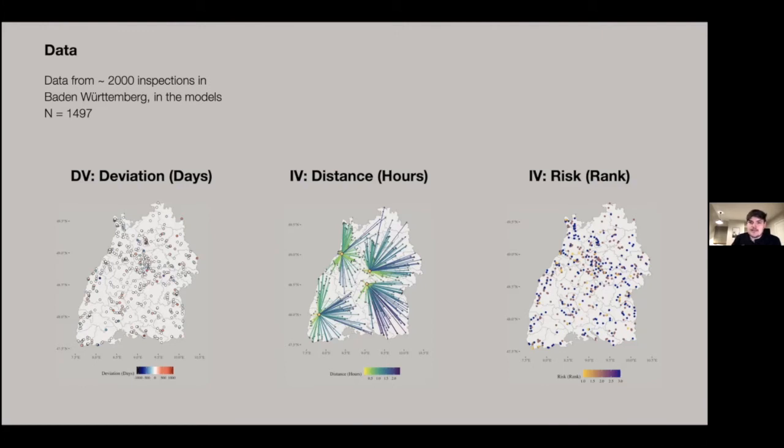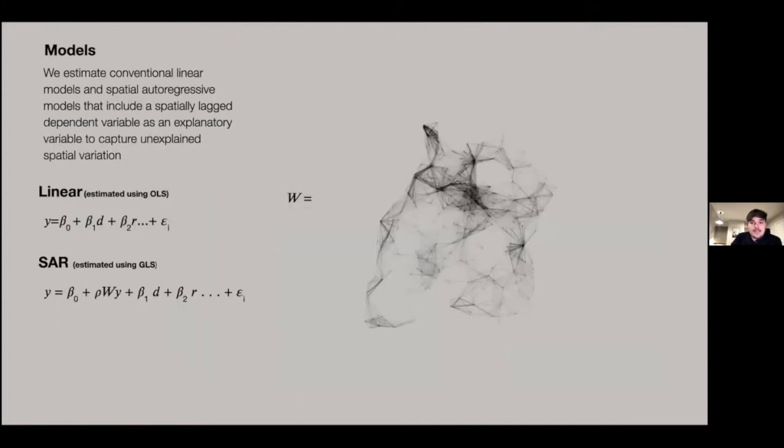Those are our main independent variables and the ones we hypothesized on the basis of. We also have a set of controls, for example year effects and sector effects, and so on. Coming to the models, we have two different estimation strategies. First, we estimate a set of simple linear models. Here we include cluster-robust standard errors to account for the nested structure of the data. Still, we found that we have residual spatial autocorrelation. So we therefore also estimate a set of spatial autoregressive models. Here we include a weighted spatially lagged dependent variable as an explanatory variable. We use an inverse distance weight here, so closer locations should have similar patterns in terms of the deviation we find. The weighting matrix can be seen here on the right.